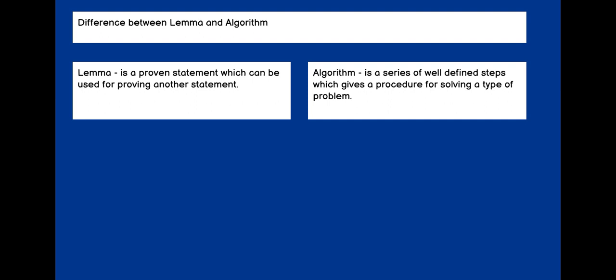What is the difference between a lemma and an algorithm? Theorem is a mathematical statement which needs to be proven. Whereas lemma is a statement that is already proven and there is no need to prove it again. Algorithm is a series of well-defined steps to solve a mathematical problem or question.